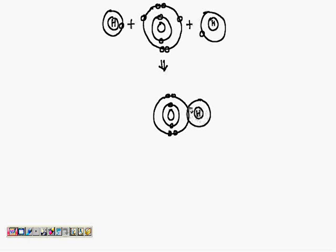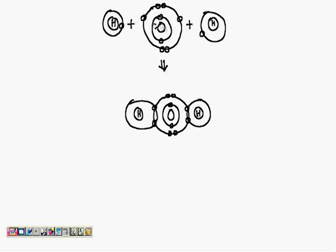This one electron and this one electron will combine together, so I will overlap these bonds with the orbit of the hydrogen atom, and these two electrons will be shown here. Then I'll draw on the other side the overlapping orbit of the other hydrogen atom. This electron is of oxygen and this electron is of hydrogen — so two electrons are shared.